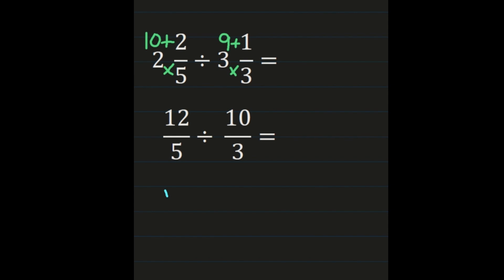We have 12 fifths divided by 10 thirds, and we're keeping the first fraction exactly the same — 12 fifths remains 12 fifths. Then we're changing that division sign to a multiplication sign and we're multiplying by the reciprocal of 10 thirds, which is 3 tenths. The denominator becomes the numerator and the numerator becomes the denominator.